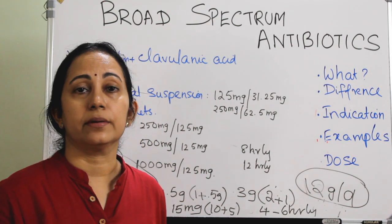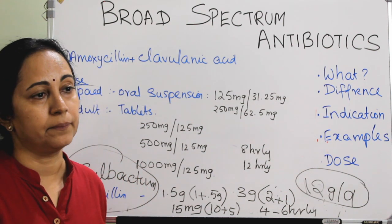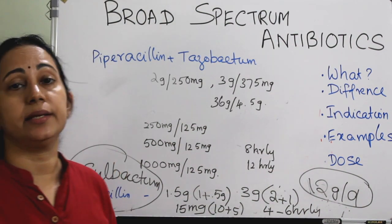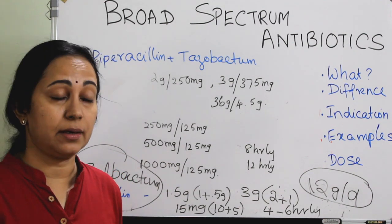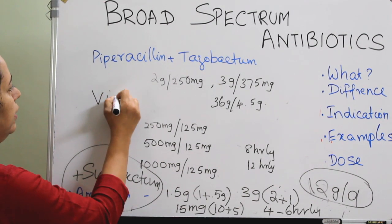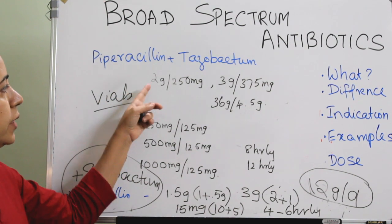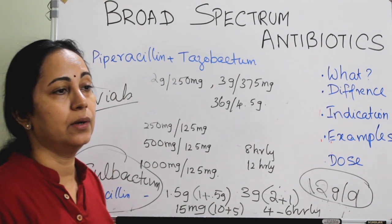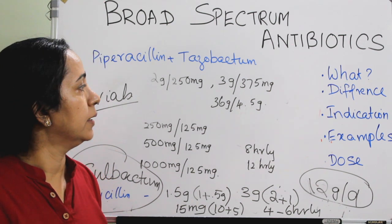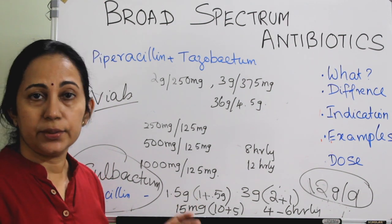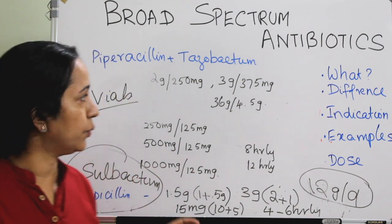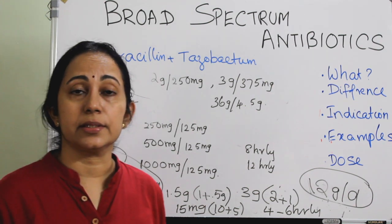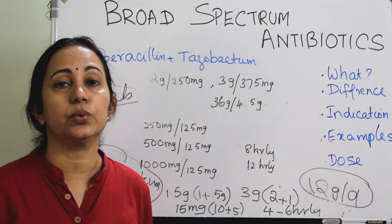The drug of choice for Pseudomonas aeruginosa presently is piperacillin and tazobactam combination, which is highly effective against Pseudomonas aeruginosa. Available in vials for injection — 2 g per 250 mg, 3 g per 375 mg, or 4 g per 4.5 g — usually given as an infusion over 30 minutes. Cephalosporins and azithromycin are also broad spectrum antibiotics.